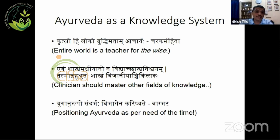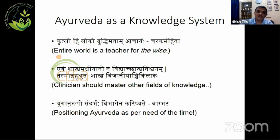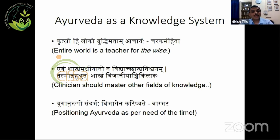That is evident in various codes — there are hundreds of codes that give us an idea how Ayurveda approaches knowledge. Charak says, 'Krishno-hiloko buddhimata-macharya.' Sushrut says, 'Ekam Shastra Madhiyanona Vidyat Shastra Nishchayam.' Then Vagbata says, 'Yugaanda Rupos Andhara Baha Vibhagena Karishyate.' These are various words that really tell us a lot about Ayurveda as a knowledge system.